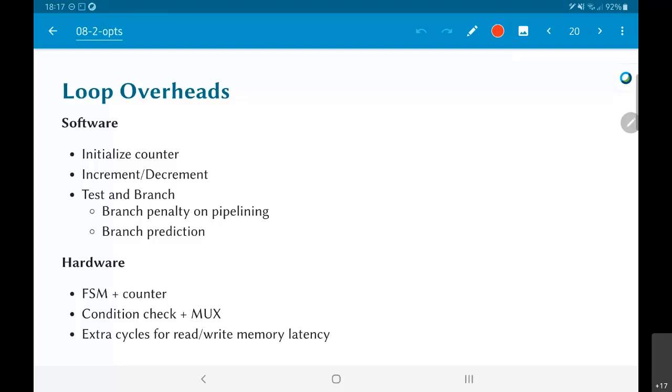On the hardware level, how are loops implemented? They are typically going to be some kind of a finite state machine plus a counter. Once again the same story - the finite state machine needs to check some condition, there will be some multiplexing which decides whether I need to jump back to this state or whether I need to proceed. And on top of that if there is some read or write operation involved from memory that would add extra latency. Bottom line is whether you are working with software or hardware there are definitely overheads associated with loops.